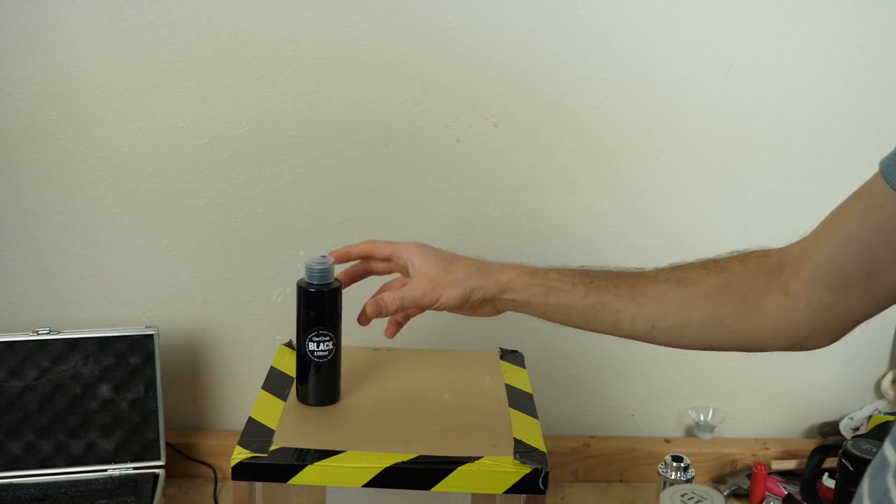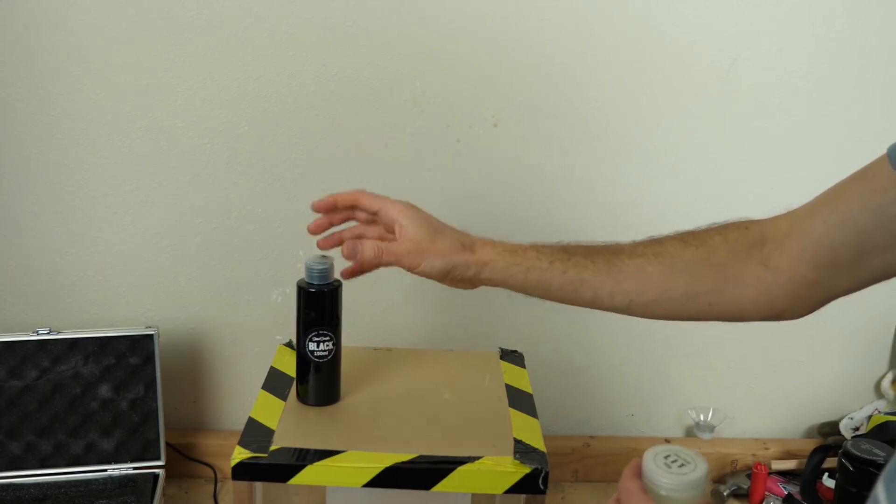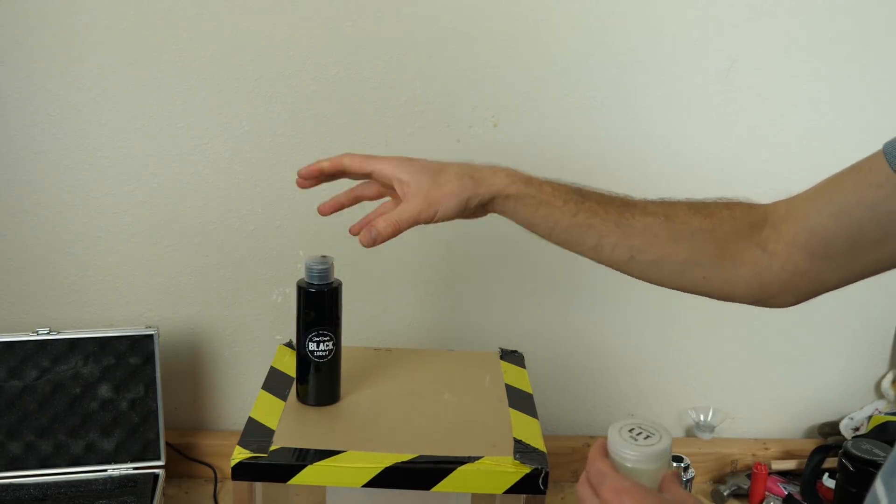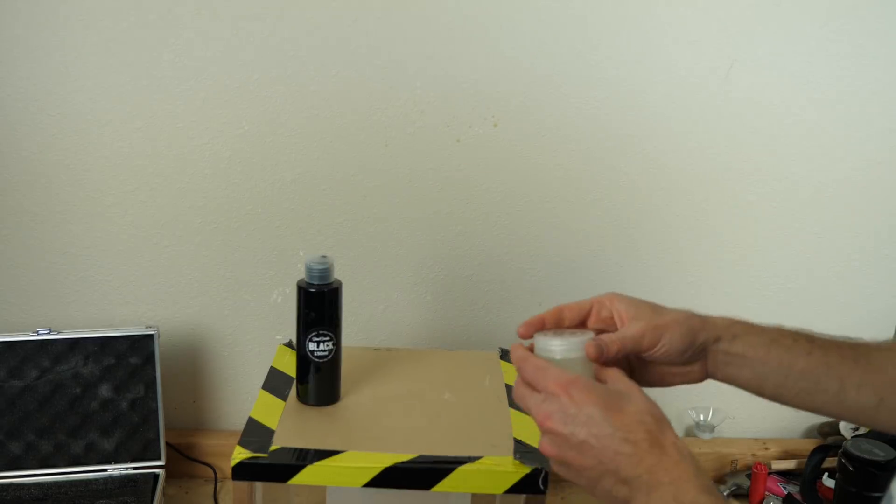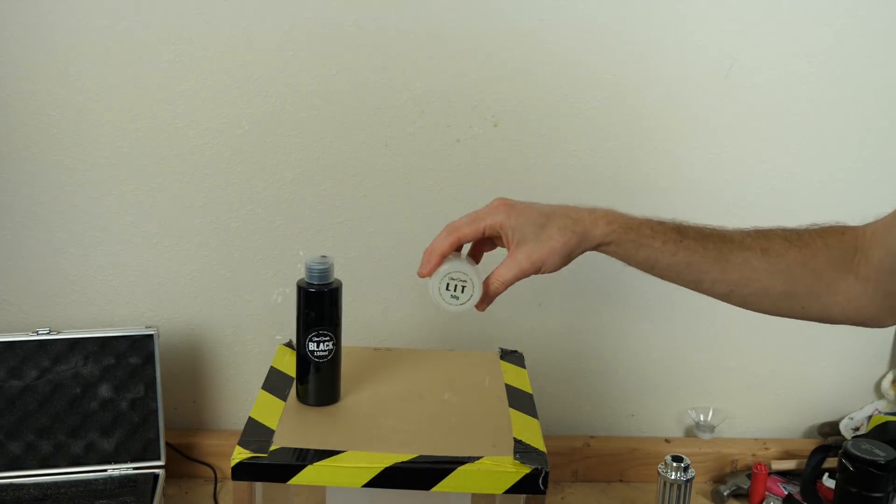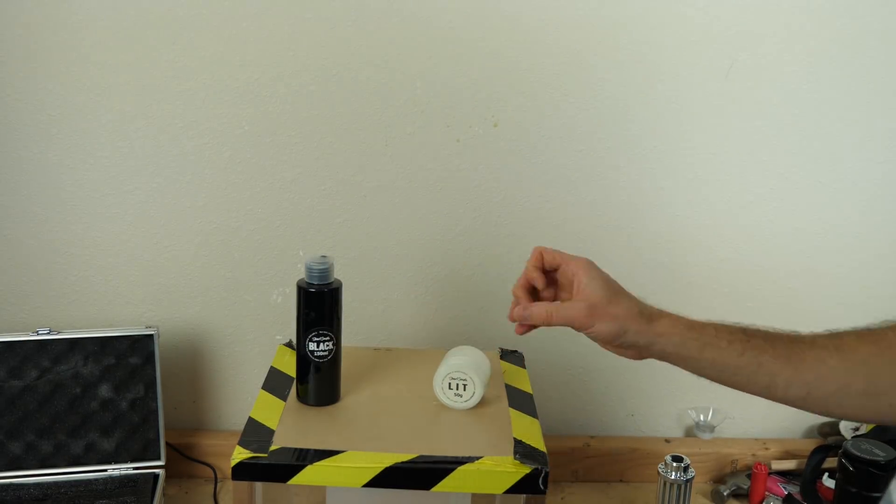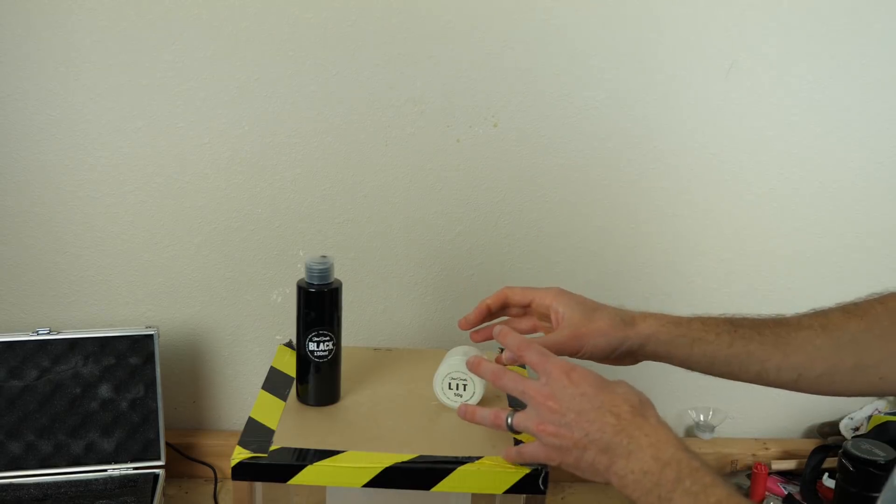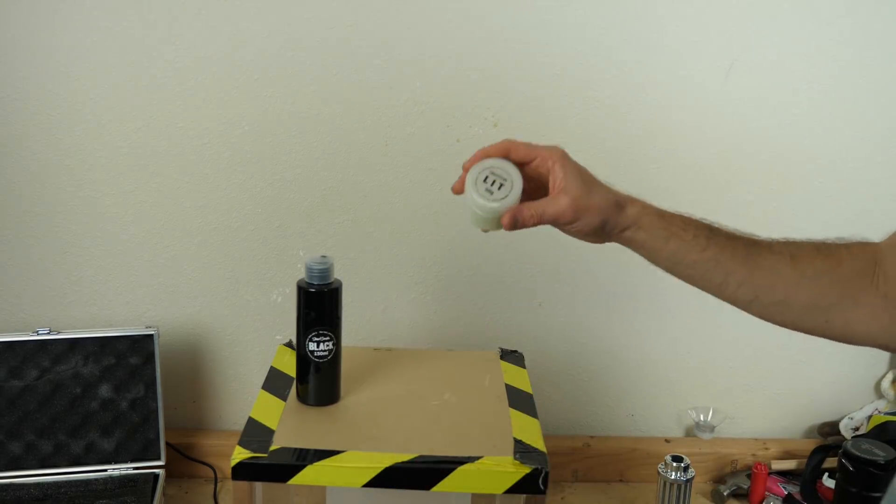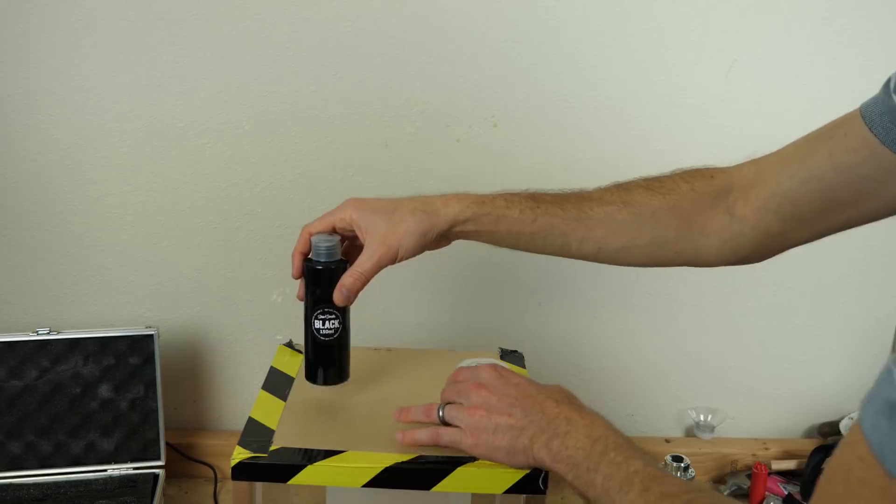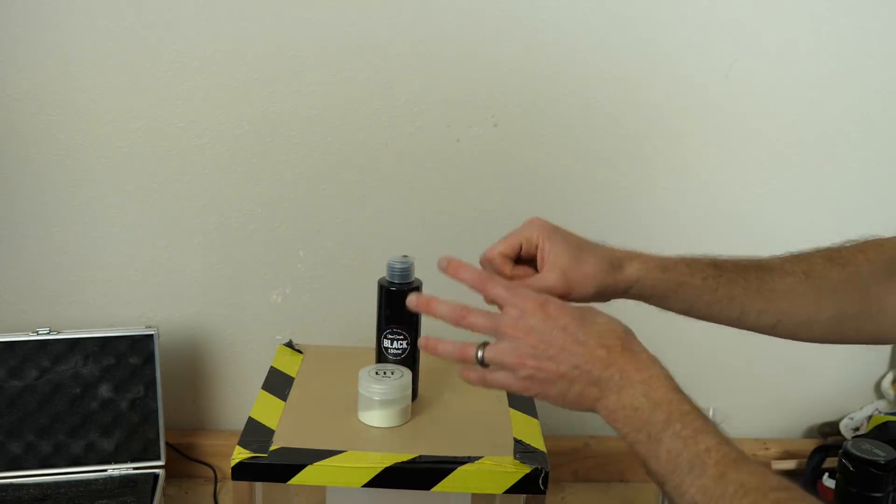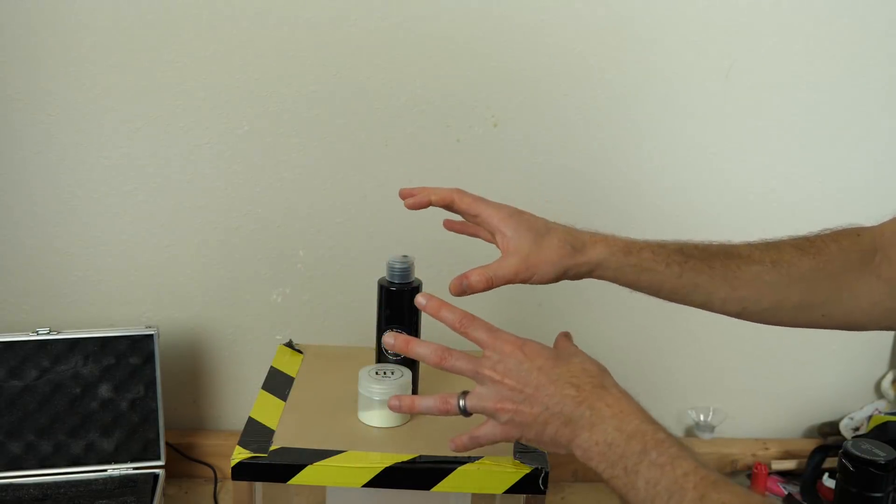So first we'll shine it on Black 2.0, which is the blackest paint on the market. It absorbs almost all the light that touches it. And then we'll shine it on Lit, which is the brightest paint on the market. It's so bright that it actually gives off light. It's a glow-in-the-dark pigment. And then at the end, I'm going to mix them both together and shine the light on it and see what happens.